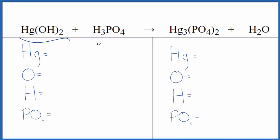Let's balance the equation Hg(OH)₂ plus H₃PO₄, mercury hydroxide and phosphoric acid. The first thing we'll do when we balance equations is count the atoms up, and we'll use a bit of a trick here to make this easier.